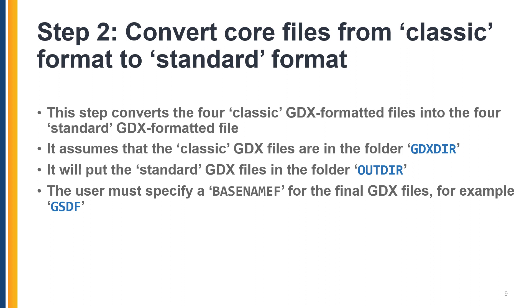The second step converts from the classic format to the standard format. It will convert all four classic GDX formatted files into the four standard GDX formatted files. More details are available in accompanying documentation on what that conversion entails. It assumes the classic GDX files are in the GDXDIR folder, and the output will be placed in the OUTDIR directory. The user must specify a base name for the final GDX files, for example GSDF.